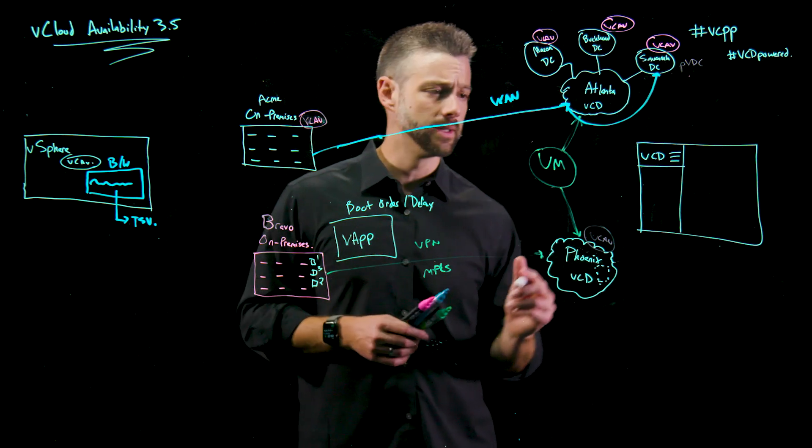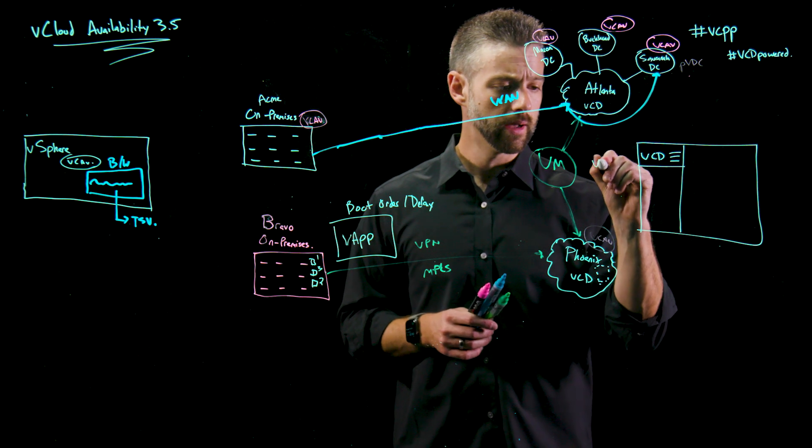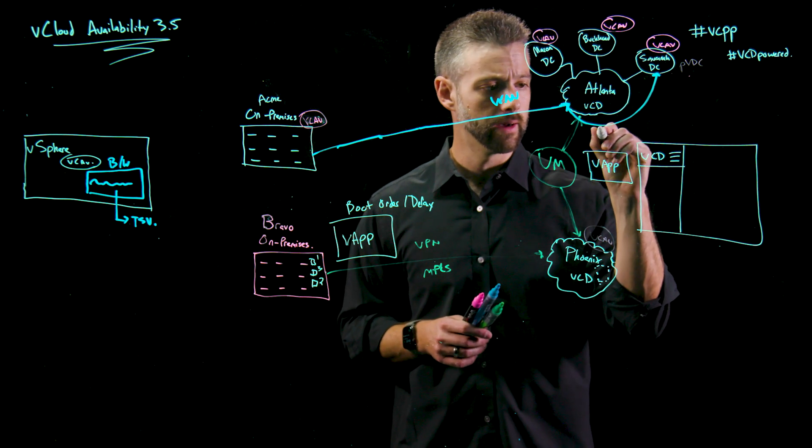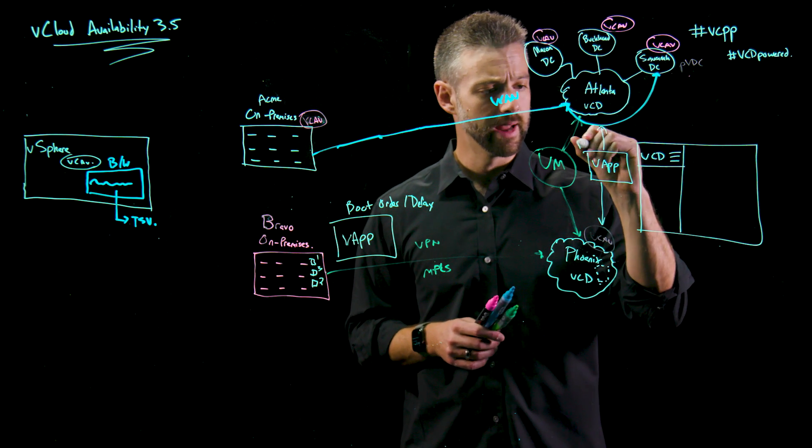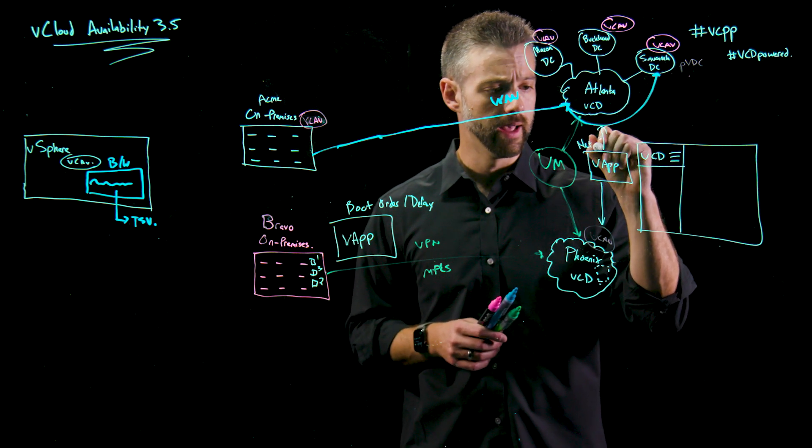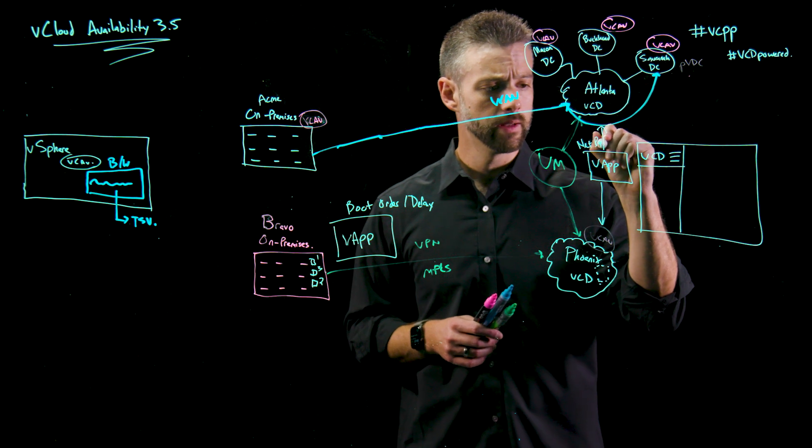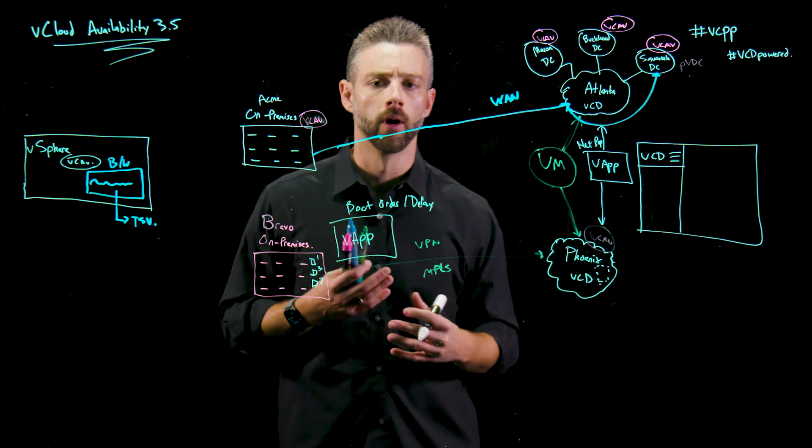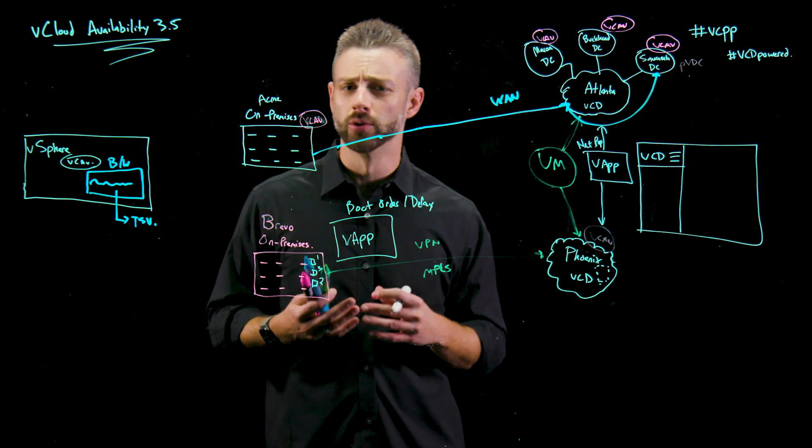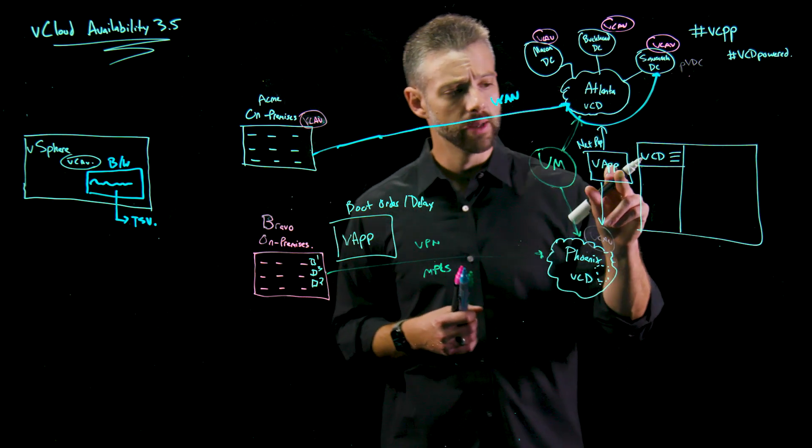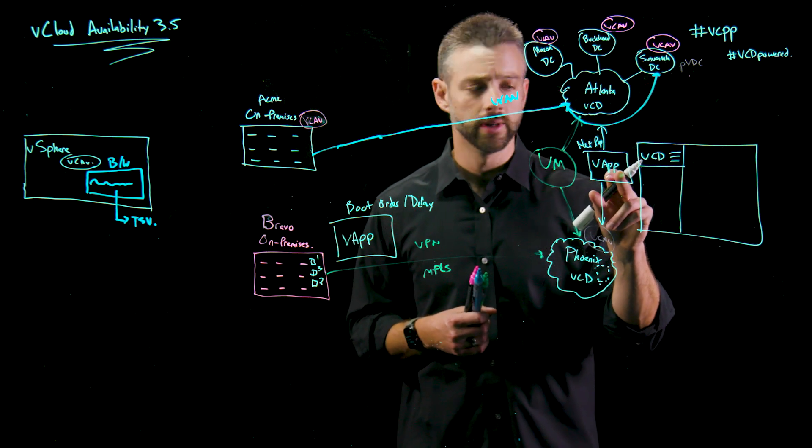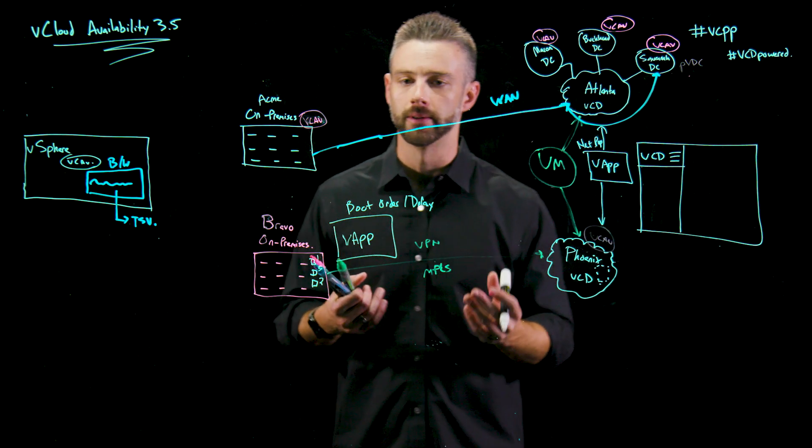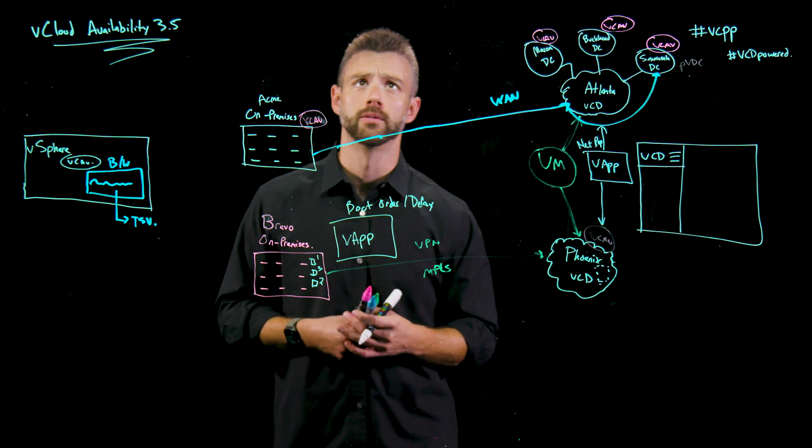This also exists for cloud-to-cloud protection. Not only can we do VApp constructs within a cloud-to-cloud use case, we can also look at network properties of a VApp. So within the VCD construct, we have things like a VApp network, or a VApp edge, or natting, or anything like that. Those can be protected within vCloud Availability and copied from a source to a destination inside of the C2C or cloud-to-cloud context within the overall environment.